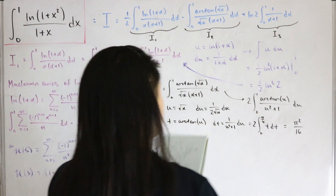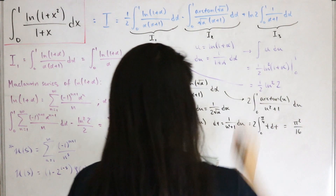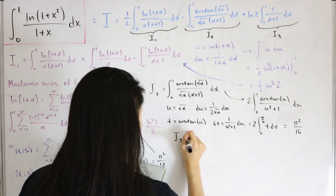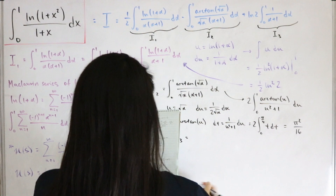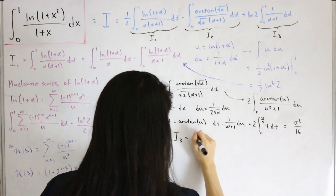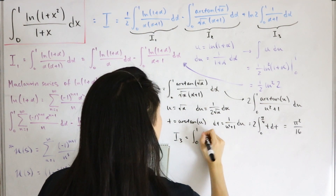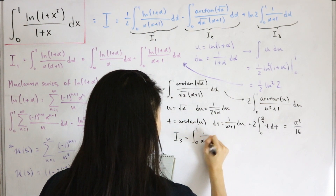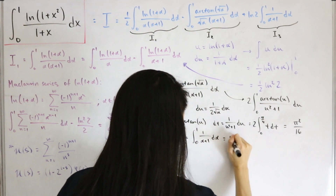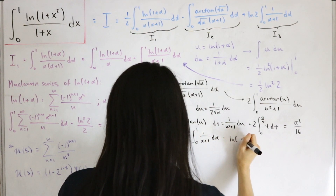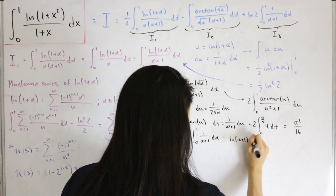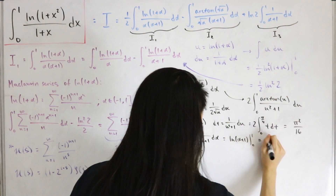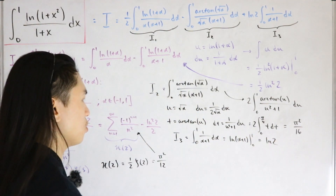I₃ is the easiest integral: the integral from zero to one of 1/(α+1) dα, which equals ln(α+1) evaluated from zero to one, giving simply ln(2).